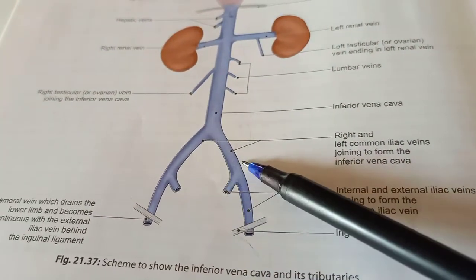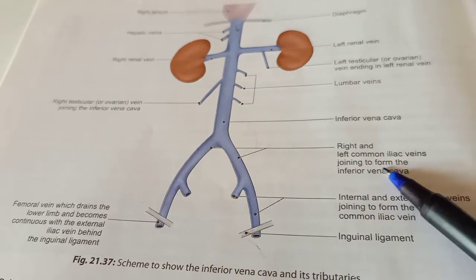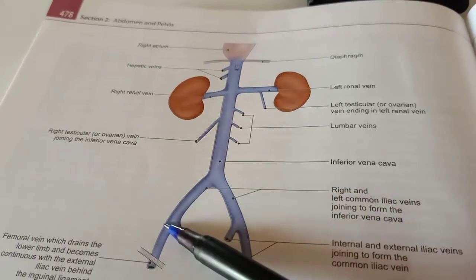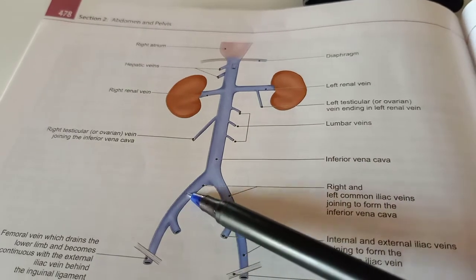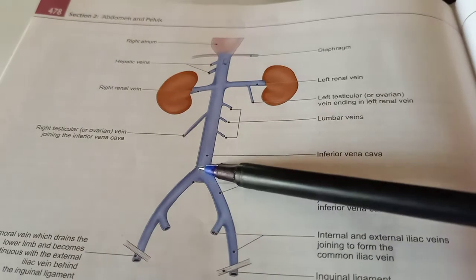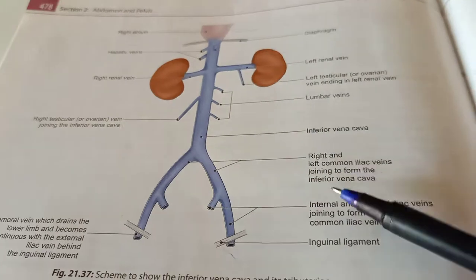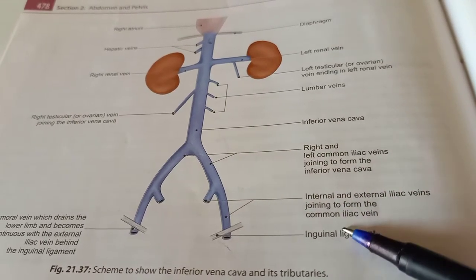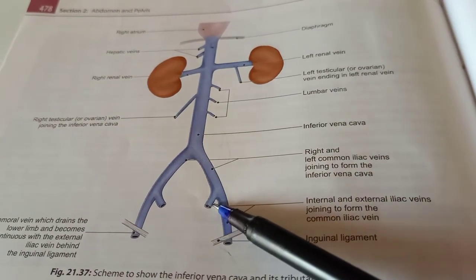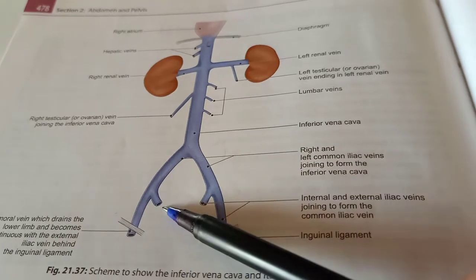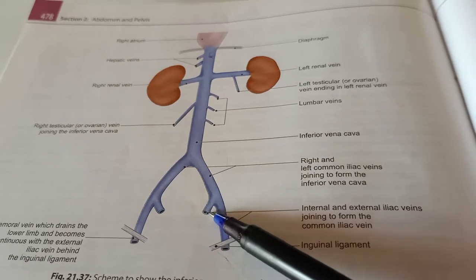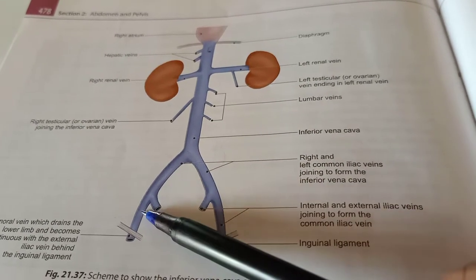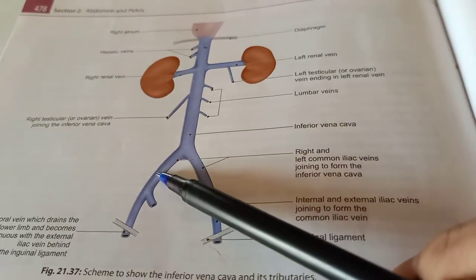The inferior vena cava is formed by the joining of the right and left common iliac veins. The right common iliac vein and the left common iliac vein unite to form the IVC. Now the right and left common iliac veins are themselves formed by the union of the internal and external iliac veins of both sides. They join to form the common iliac veins.